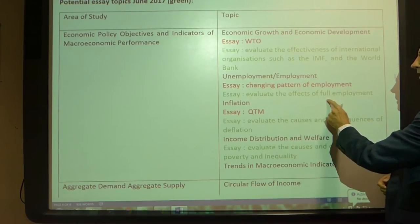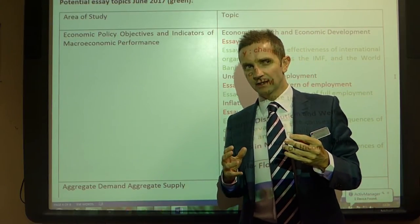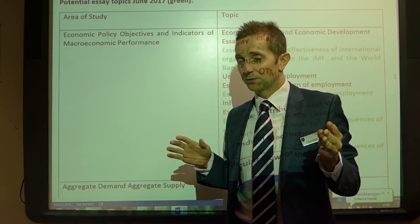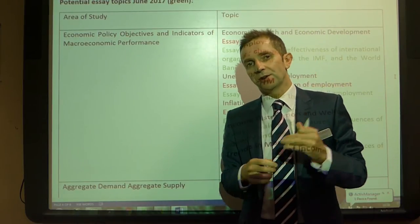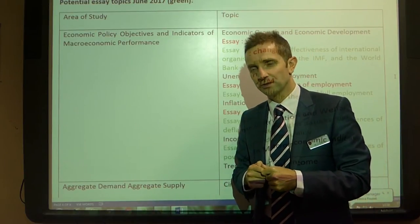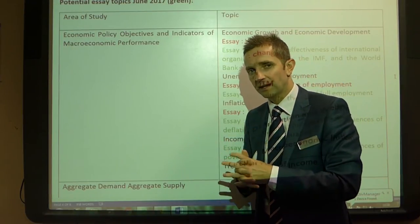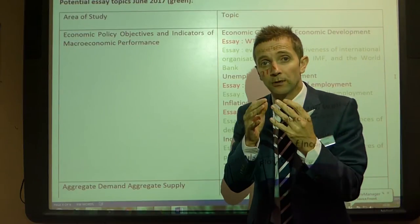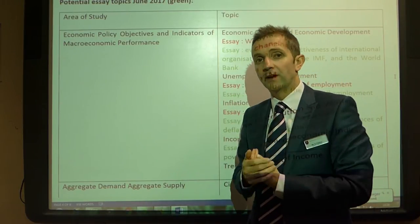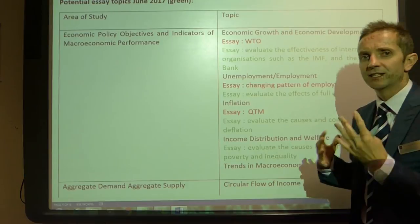What about evaluate the effects of full employment? We often see essays about unemployment, but examiners have a tendency to throw in a curveball. As unemployment in the UK and the US falls and we move towards full employment — remember, full employment is not 0% unemployment — we're nudging towards that 4% line in the UK. You might be asked to consider both the pitfalls and the advantages of that. A nice essay, I think.